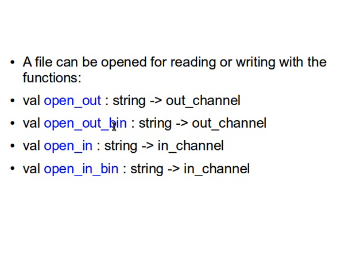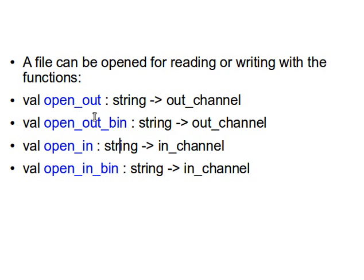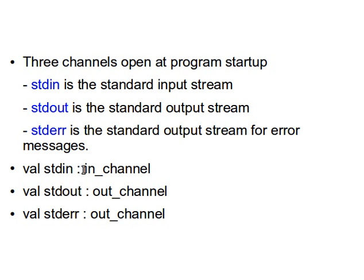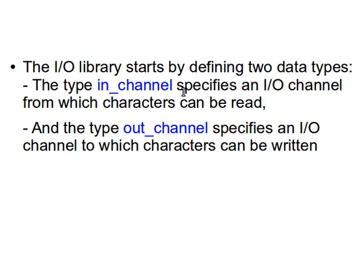There is also open_out_bin for binary - we'll leave that for the moment. open_in opens a file for reading; it takes a string, the fully qualified file name with the full path, and returns an in_channel for reading rather than writing to a file.